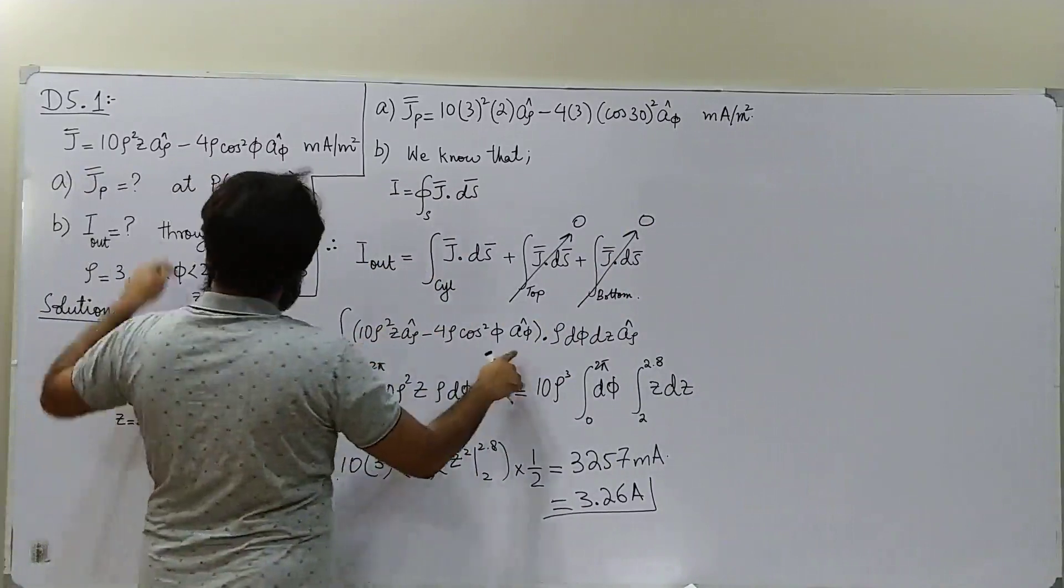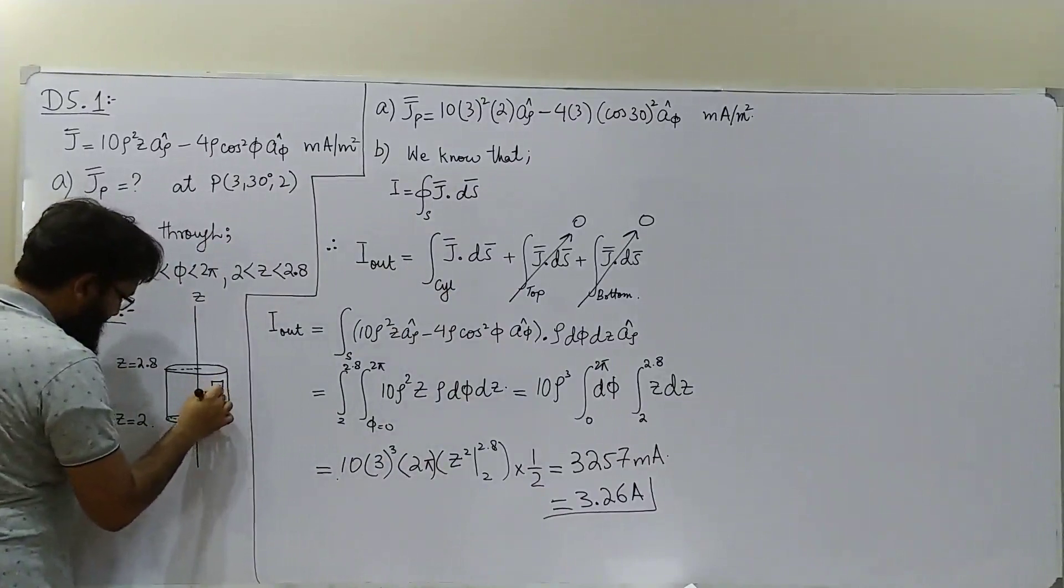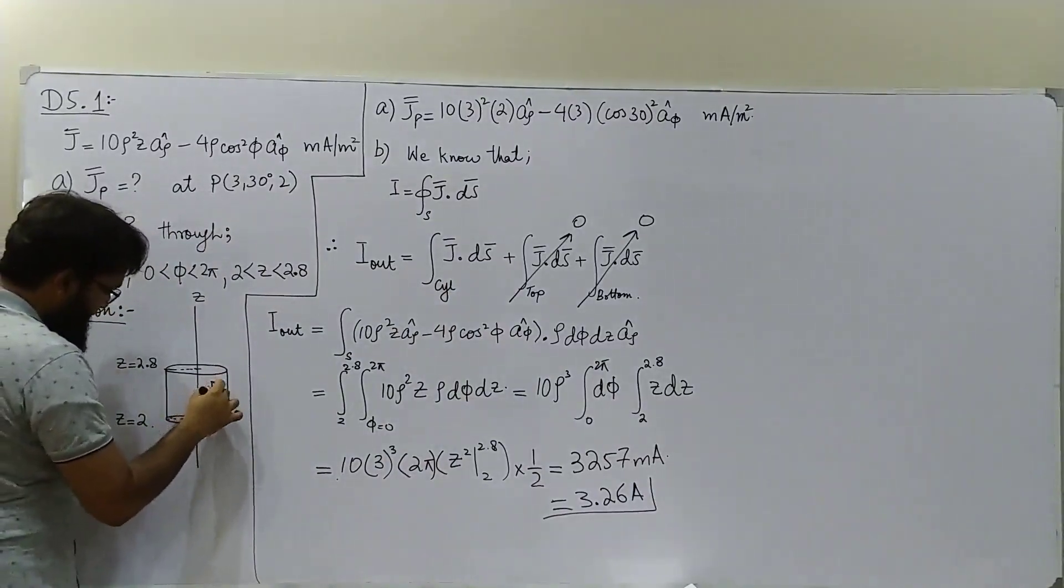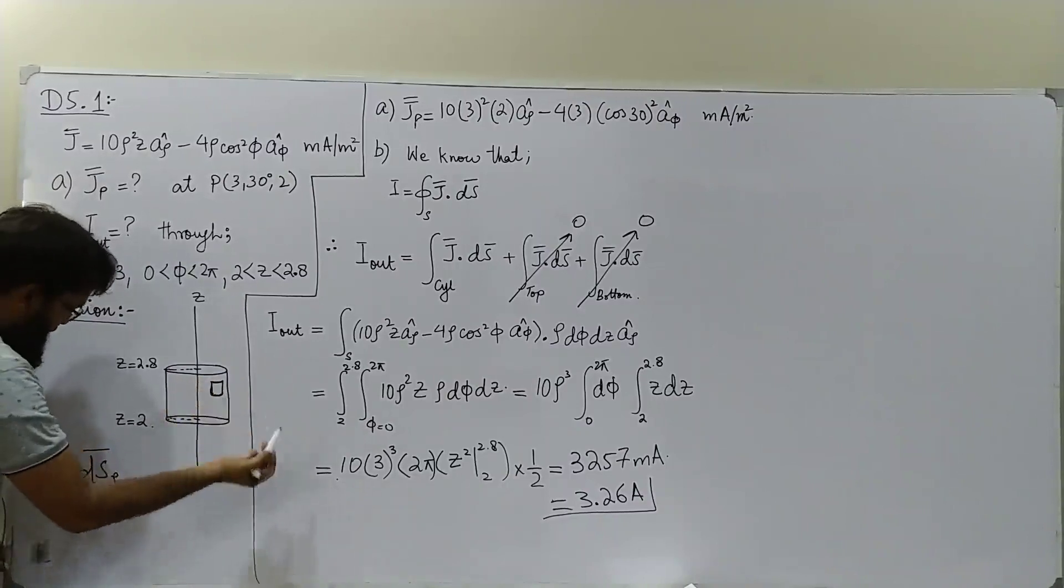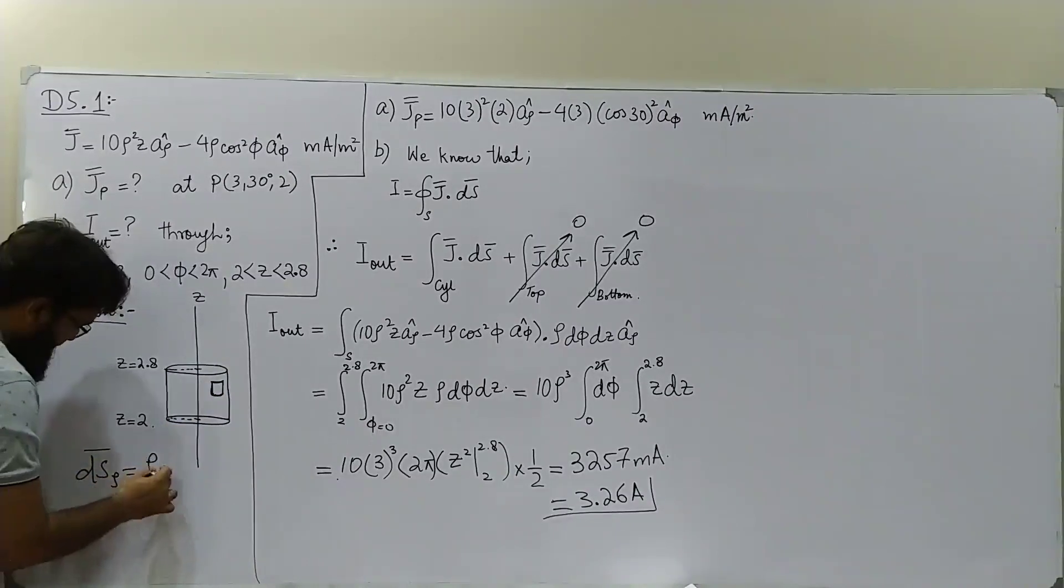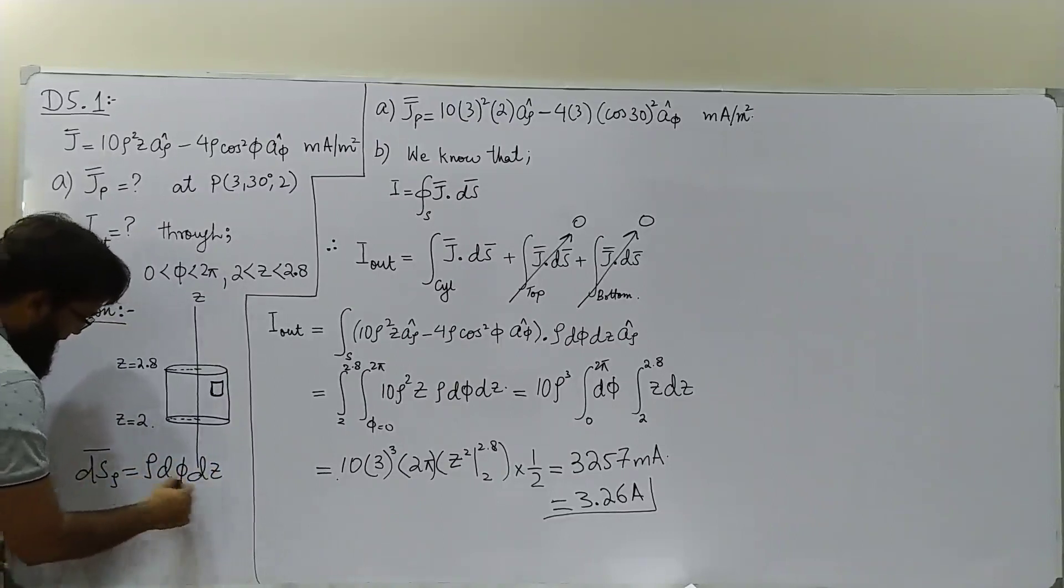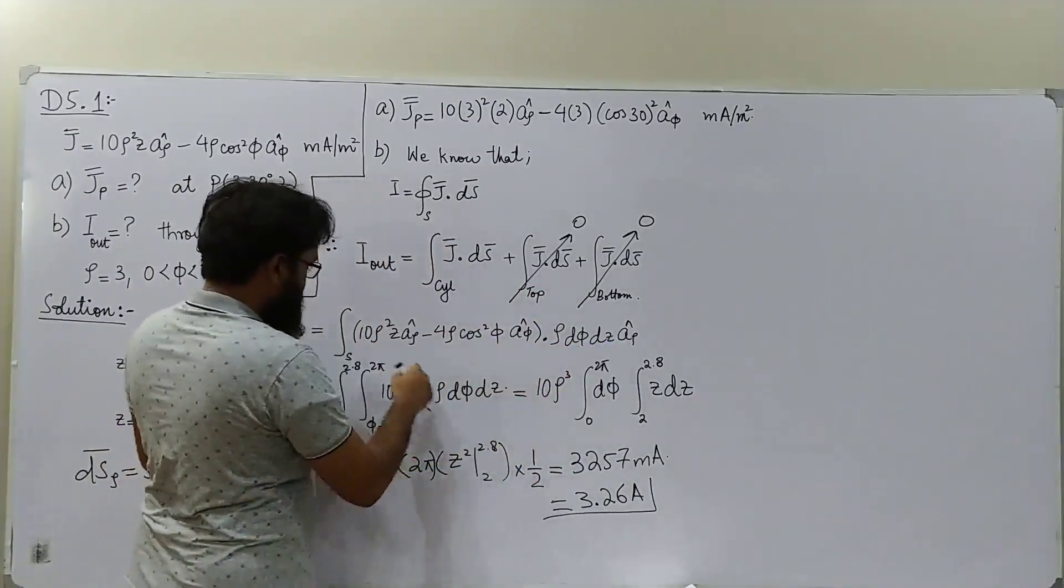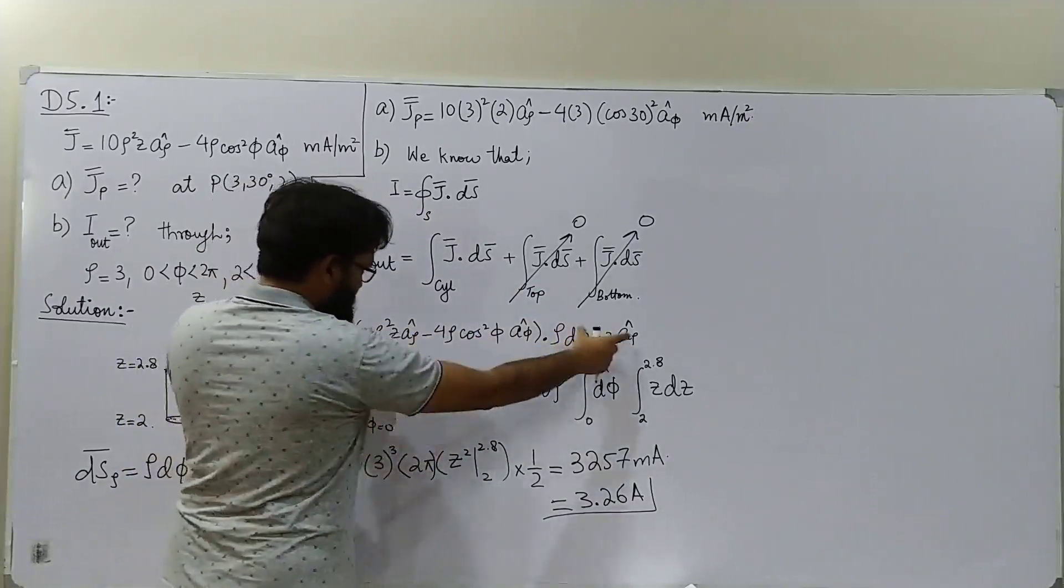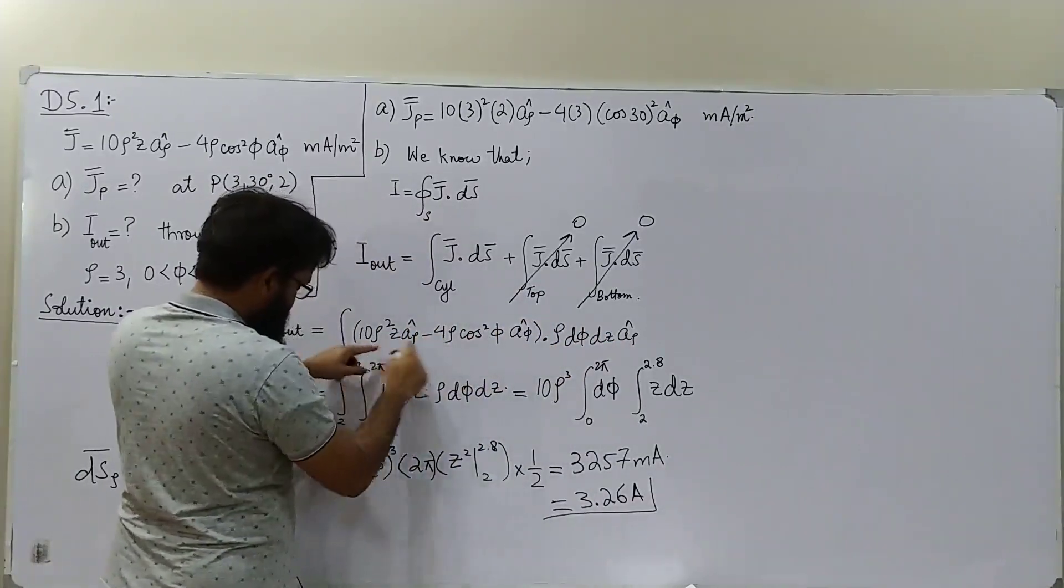For ds, you know this is on the cylindrical surface. Obviously for this, the formula—as we all know—ds for ρ equals to constant, because over this cylindrical surface ρ is constant, this formula is ρ dφ dz, since ρ is constant. Remember there is no dρ here and the direction is aρ. So same it has been replaced here. Evaluate the dot product; definitely this term will remain after taking the dot product, this term will be zero.